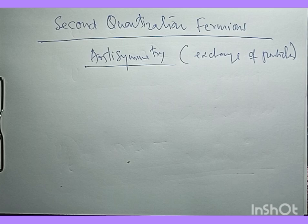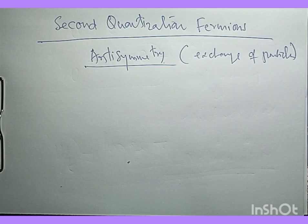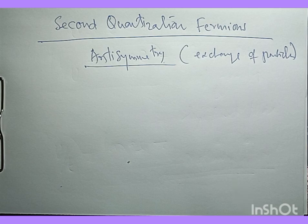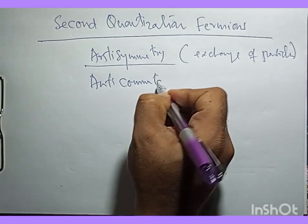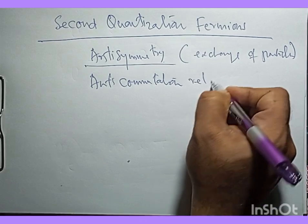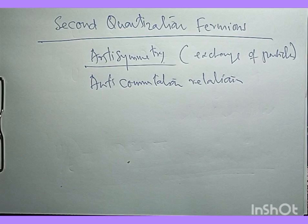In this formalism, fields are quantized and particles emerge as excitations of these fields. This approach naturally incorporates the indistinguishability of particles and the requirement of anti-symmetry of the wave function. For fermions, second quantization introduces creation and annihilation operators that obey specific anti-commutation relations. These anti-commutation relations essentially encapsulate the fermionic statistics.